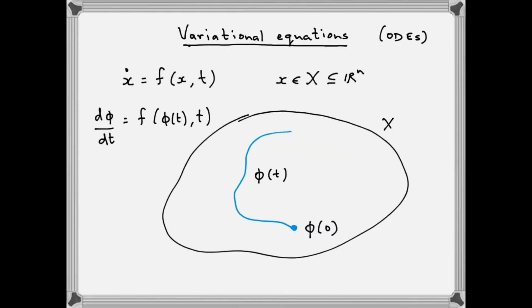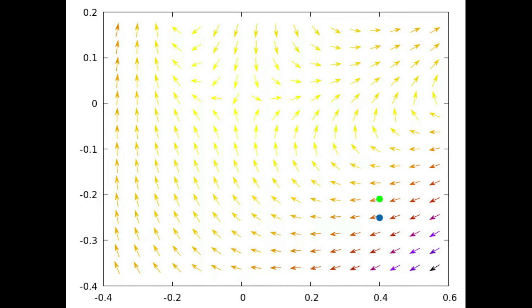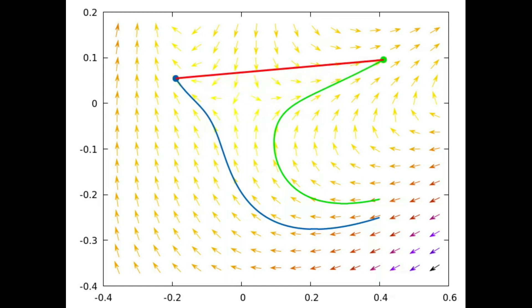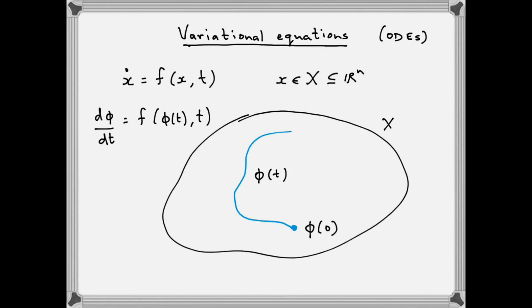Before writing down the variational equation, let's do another simulation to motivate why we're going to write it down. This time we take two nearby initial conditions of the differential equation. We're going to follow both trajectories, and we're interested in the distance between the two trajectories as they evolve in time. We see that these nearby initial conditions stay close to start with, but as time progresses the distance can grow. We would hope and expect that we can approximately predict the second trajectory based on knowledge of the first, and a practical way of looking at the variational equation is as a tool which gives us a way of making this prediction.